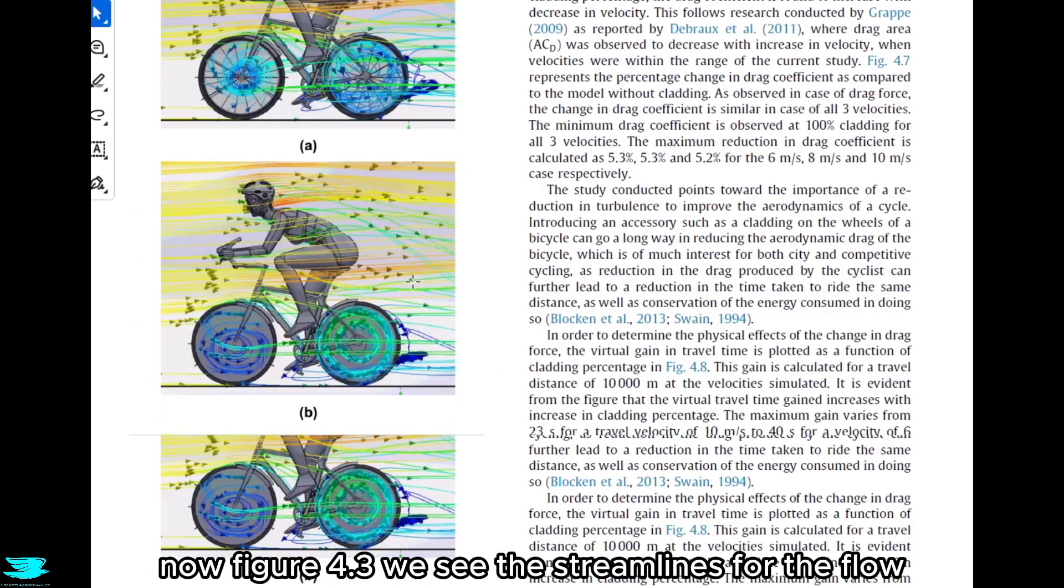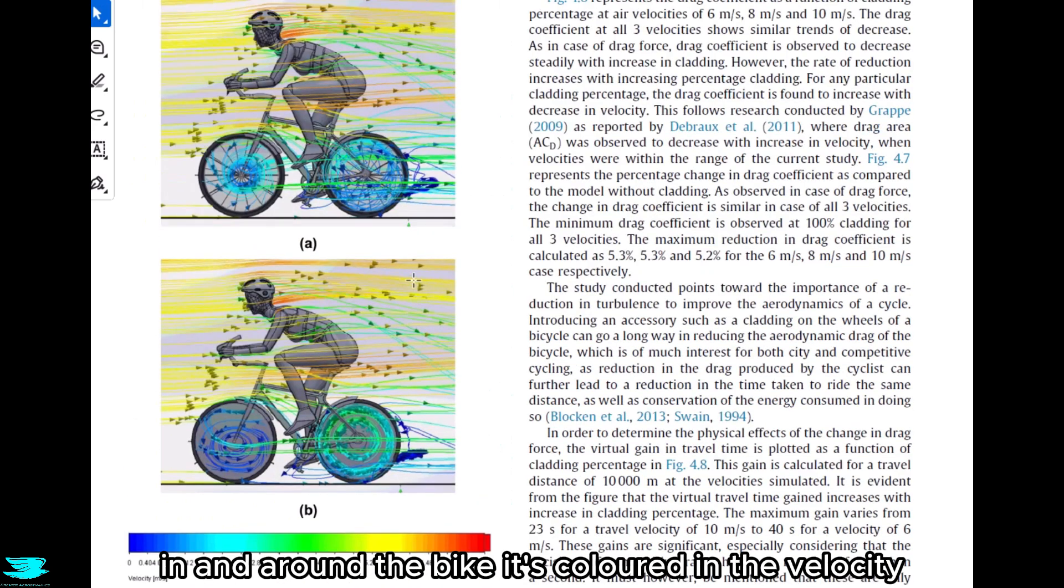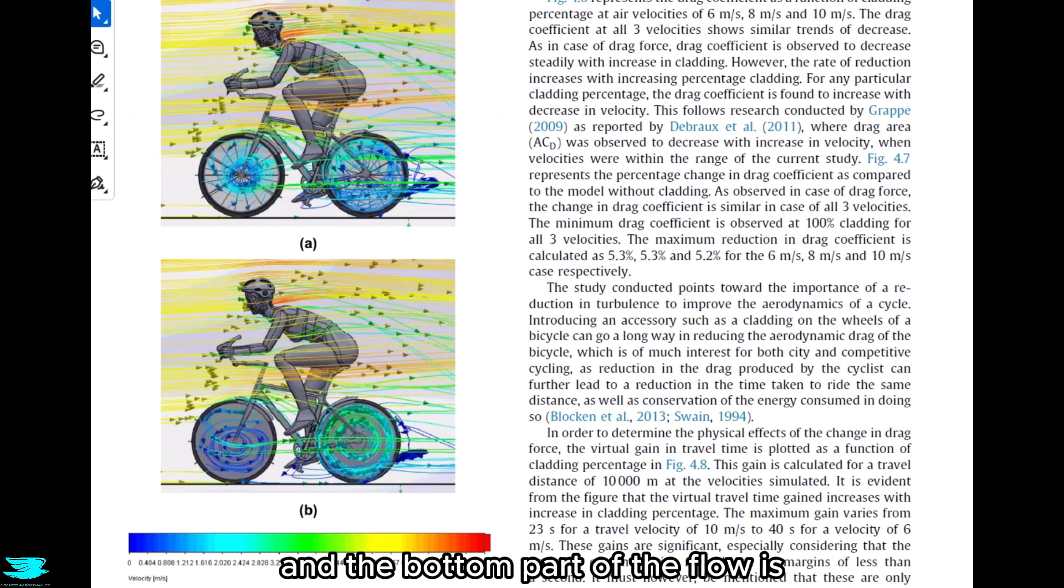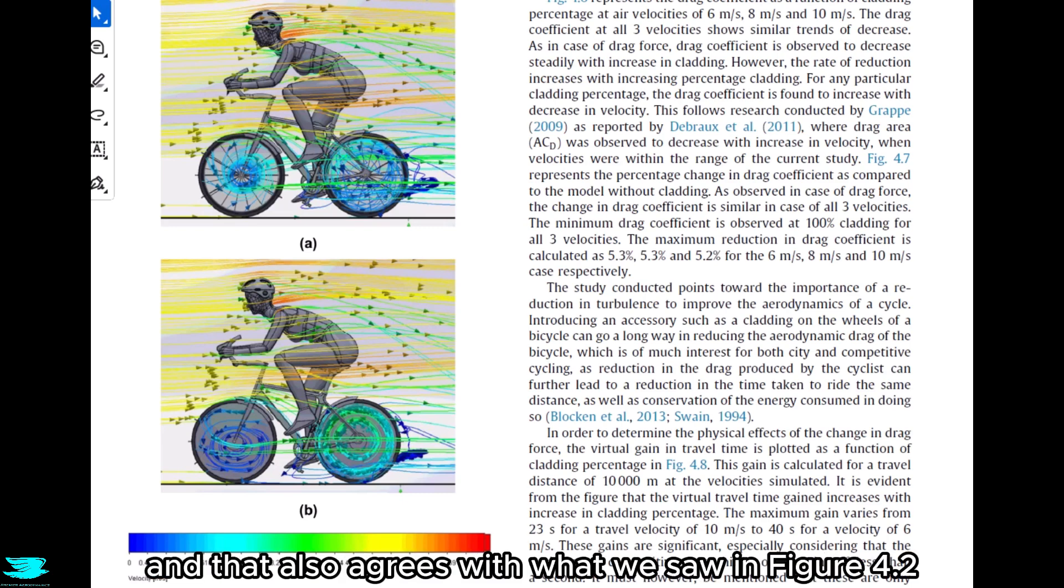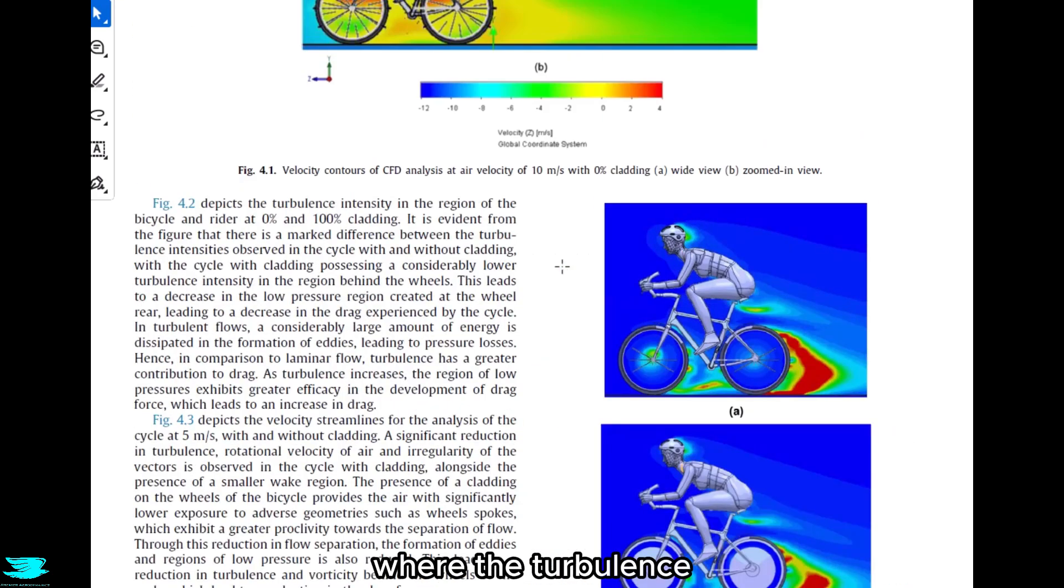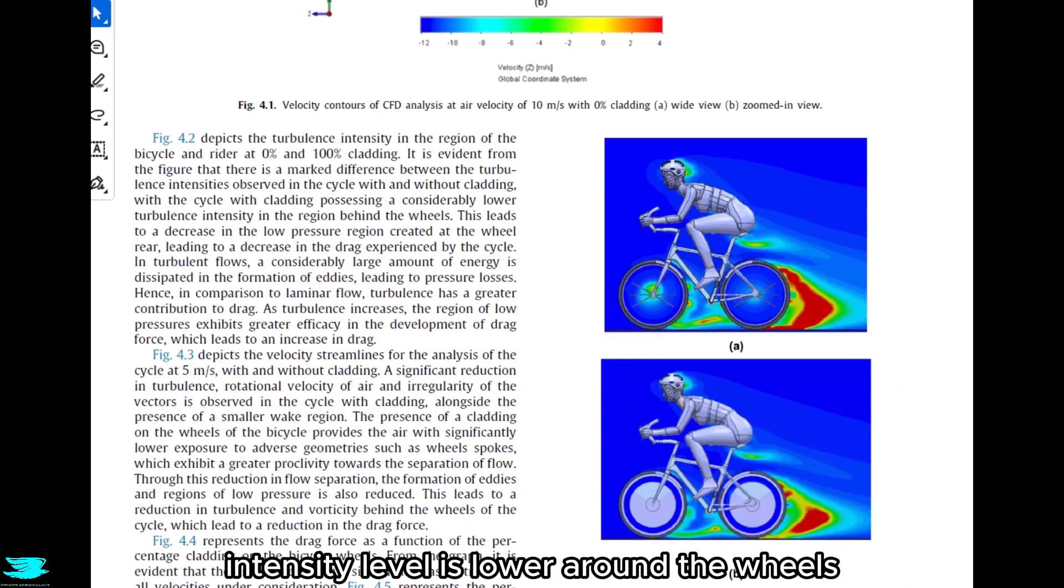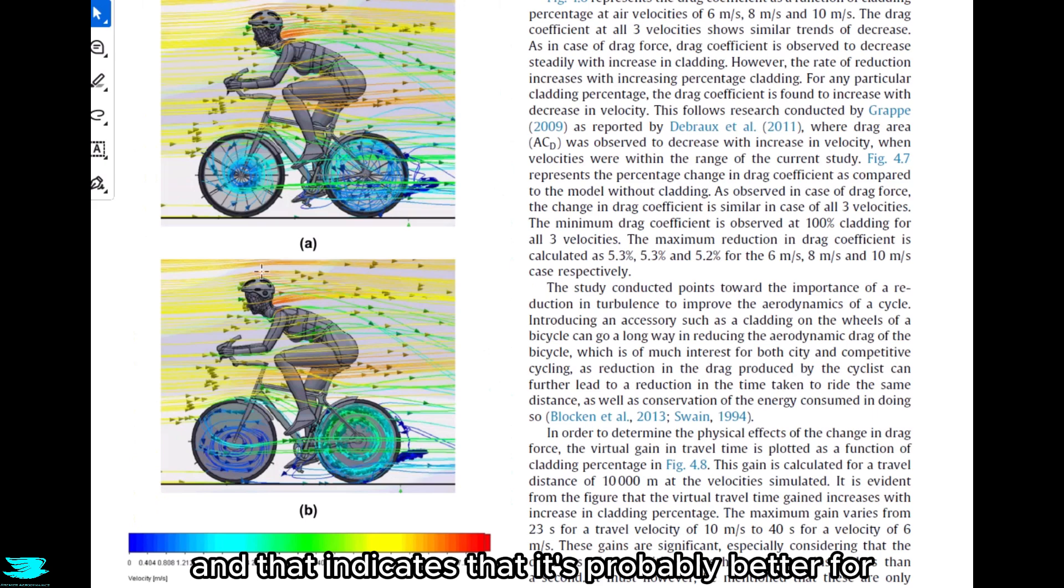Now in figure 4.3, we see the streamlines for the flow in and around the bike. It's colored in the velocity, and the bottom part of the flow is obviously changing between the completely open rims and the completely closed rims. The bottom part of the wheels, the wheels with 100% cladding, seem to churn up the flow not nearly as much as the open wheels. The flow in there that does get churned up seems to be more ordered, so the circular patterns are more distinct. That indicates less mixing, and that also agrees with what we saw in figure 4.2 where the turbulence intensity level is lower around the wheels when there was cladding. So they all kind of agree, and that indicates that it's probably better for drag reduction too.